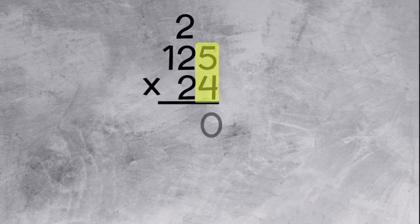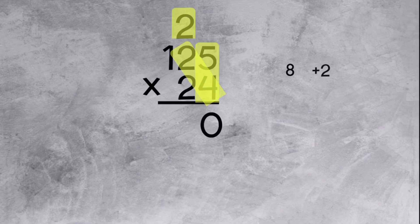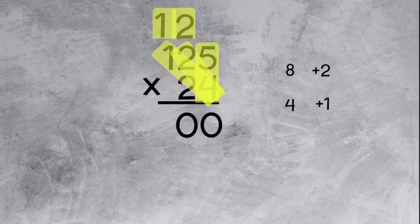Let's multiply 4 times 5, which equals 20. We carry the 2 and bring down the 0. Now we need to multiply 4 times 2, which equals 8, but we need to add the 2 from the top. 8 plus 2 equals 10. Let's carry the 1 and bring down the 0. Now let's multiply 4 times 1, which equals 4 plus the 1 on the top that we carried equals 5.